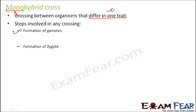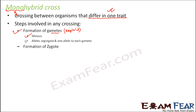For gamete formation, meiosis occurs — meiosis is the reduction division where haploid cells are produced. Gametes are haploid, whether male or female. To produce haploid cells from diploid cells, we need meiosis. After meiosis, the alleles segregate, and one allele gives rise to each gamete.